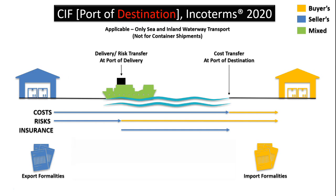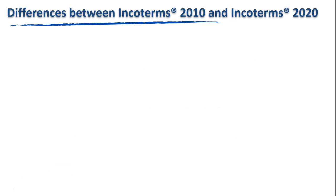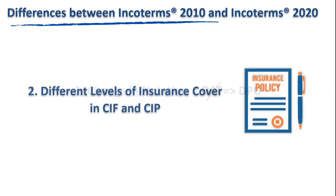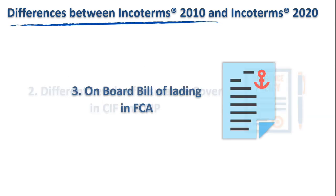Key differences between Incoterms 2010 and Incoterms 2020: DAT is replaced by DPU to indicate that the place of destination can be any place, not just a terminal. In CIP, the insurance cover must be Institute Cargo Clauses A or similar, rather than the more limited Institute Cargo Clauses C, though the option for negotiation remains. An option of issuing an on-board bill of lading to the seller is introduced in FCA.